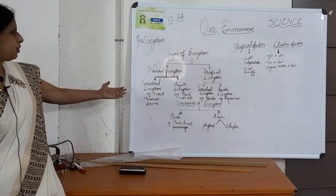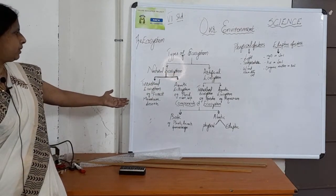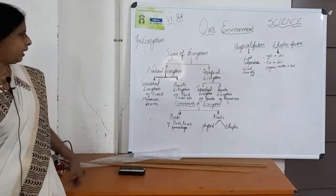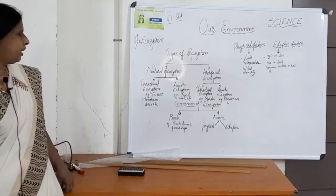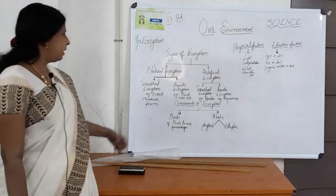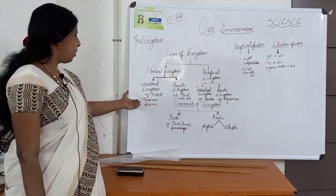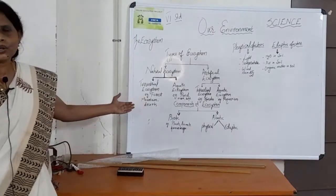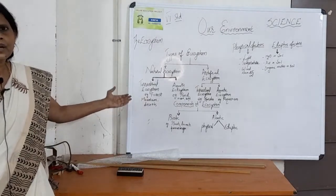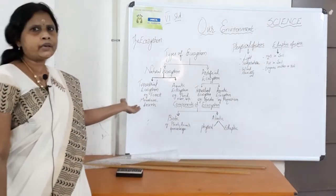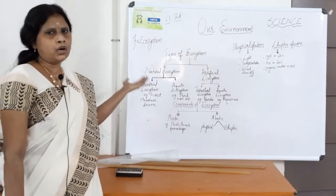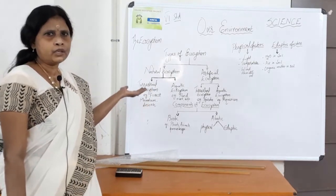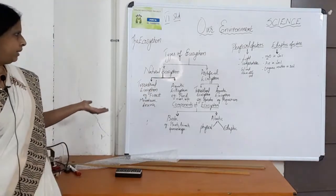The natural ecosystem is again divided into two categories: terrestrial and aquatic ecosystem. In the terrestrial ecosystem, for example, forest, mountains, and deserts. Why do we say it is a natural ecosystem? Because they are originated by God — they are not created by human beings; there is no intervention of human beings.